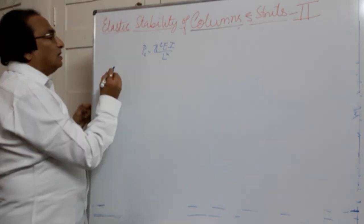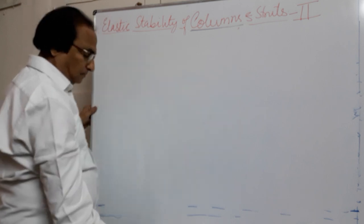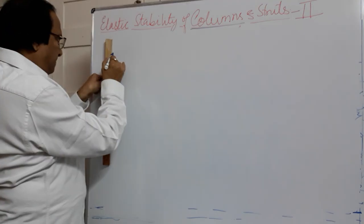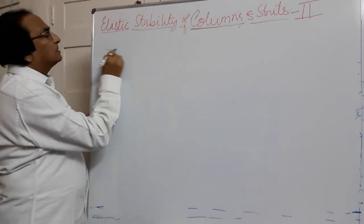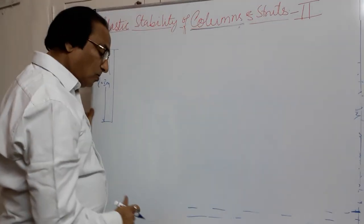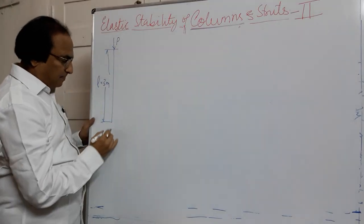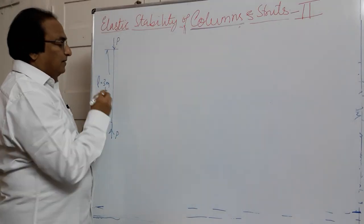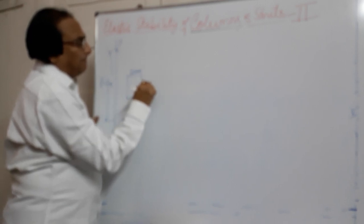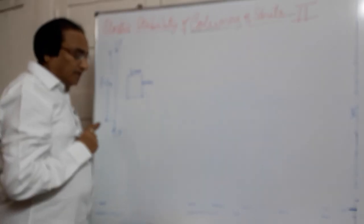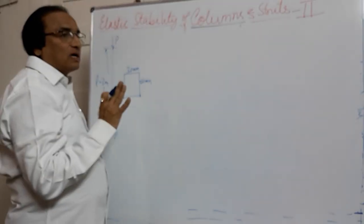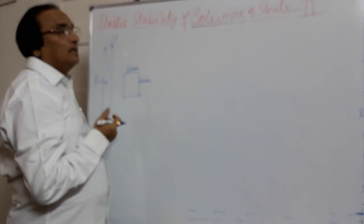So let us take a problem. We have a long column of length 3 meters, carrying a load P. The cross section of the column is 30 mm by 60 mm, uniform throughout the length. We are required to find out the load carrying capacity of the column for all four end conditions.